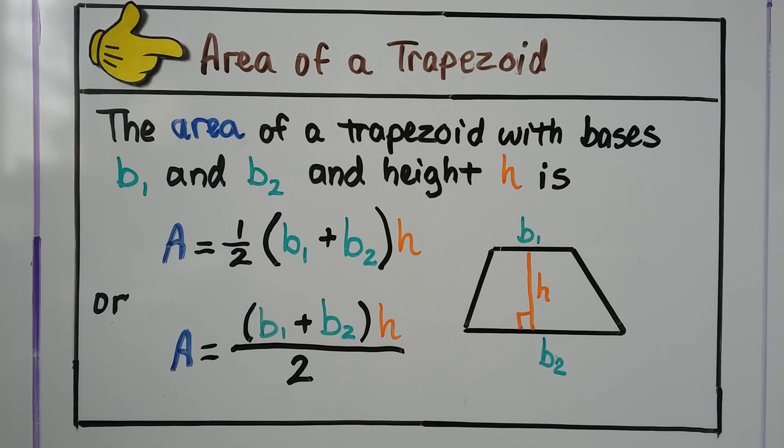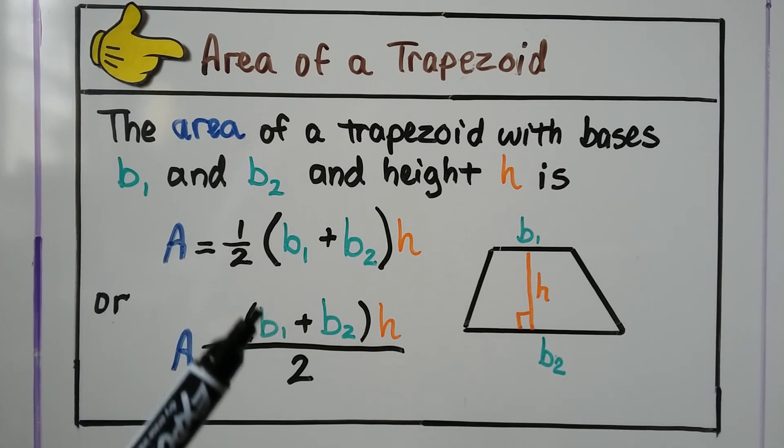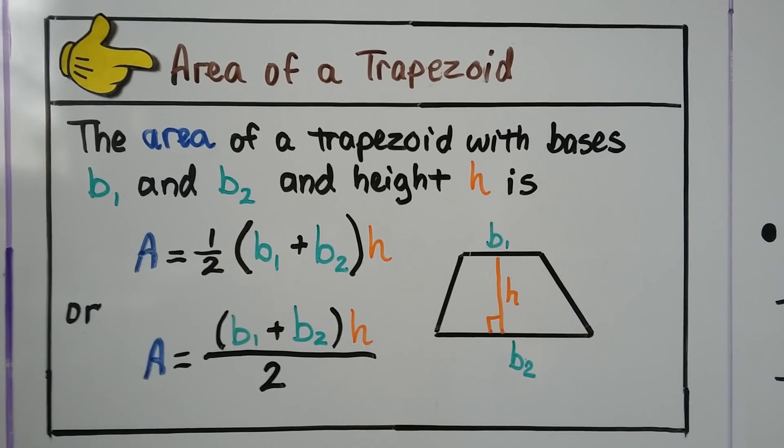For the area of a trapezoid with bases base sub 1 and base sub 2 and height h, area is equal to half times base sub 1 plus base sub 2 times the height. We could also say that we could add base sub 1 and base sub 2 multiplied by the height and then divide it by 2. We'd get the same answer.